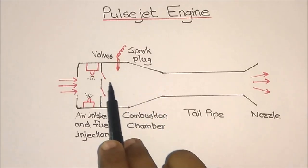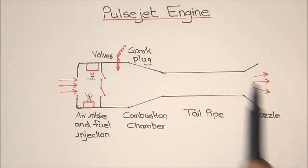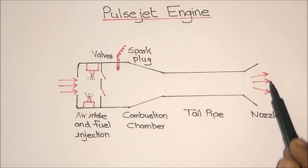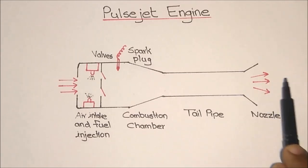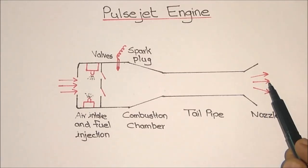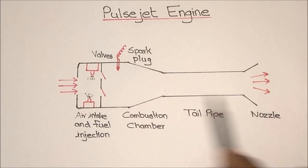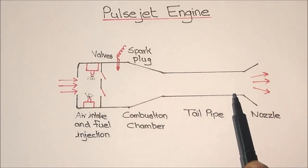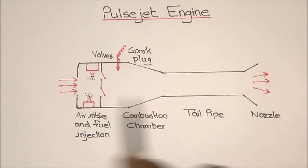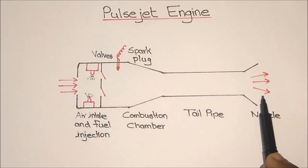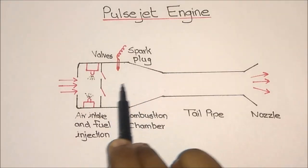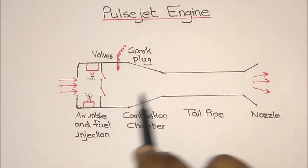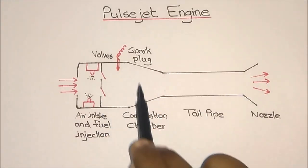The pressure at this portion — the combustion chamber — will be very high due to the explosion, while the pressure at the tail pipe exit will be less. The air rushes through the tail pipe and expands through the nozzle, giving the engine enough thrust to overcome drag forces and accelerate.